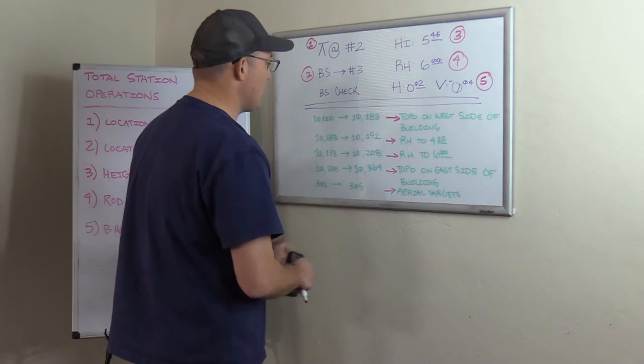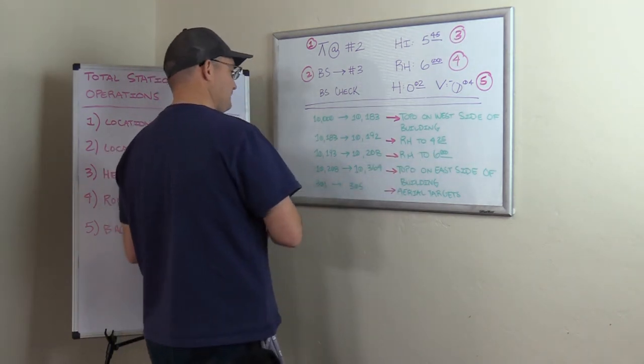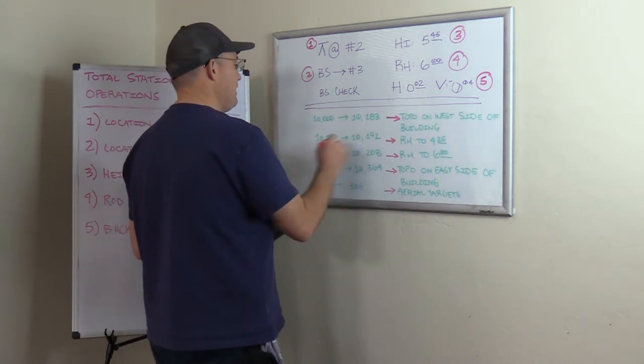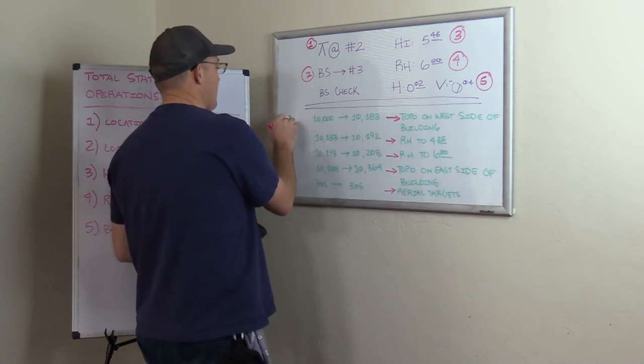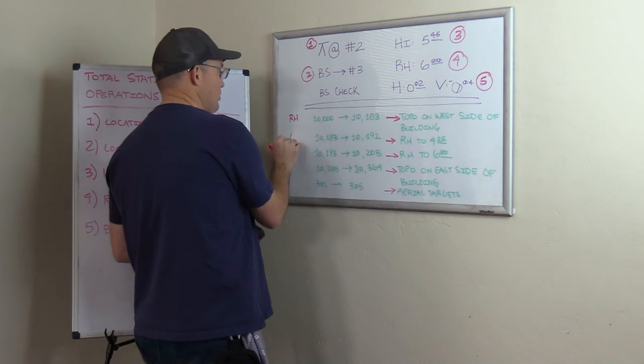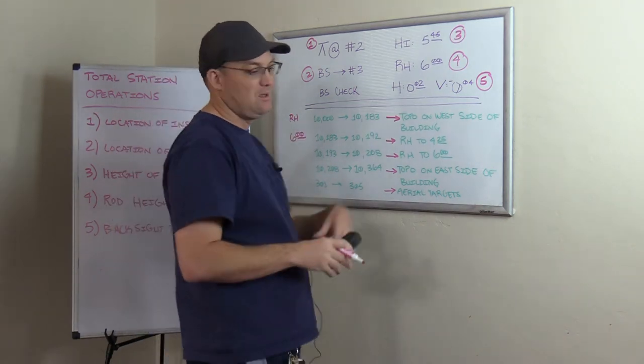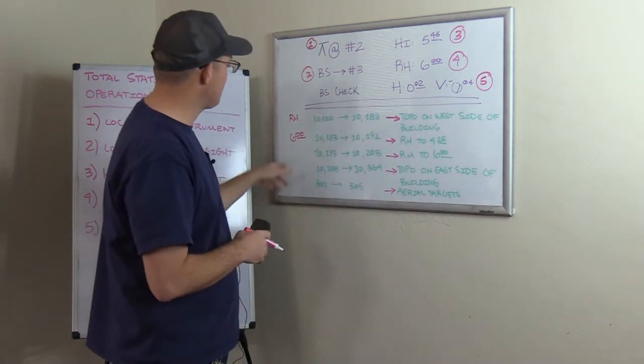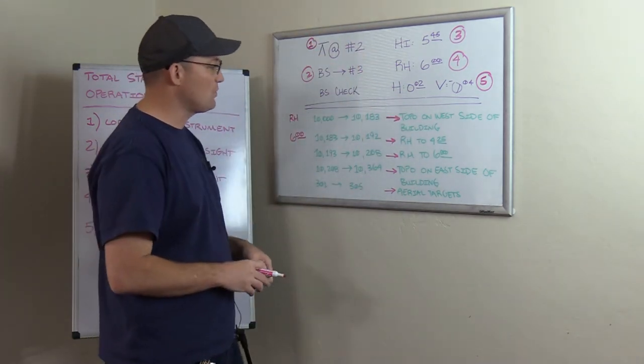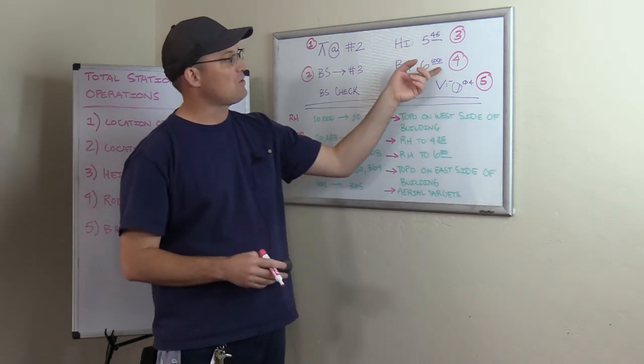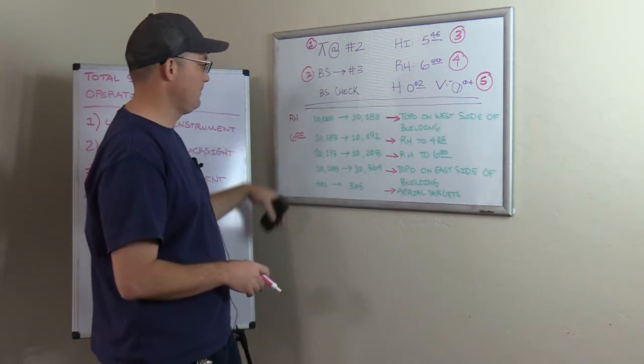Now, another way to do this is you could get rid of these rows here and you could just have another column in your notes for the rod height. So you could put your rod height over here. And then you could physically put in your rod height. By the way, at my shop, we always run our rod heights at six feet. That gets the rod and the prism up above most people's heads. Different shops have different rules. But at my shop, if you're not told otherwise, we run the rod at six foot.